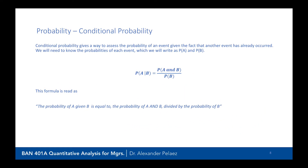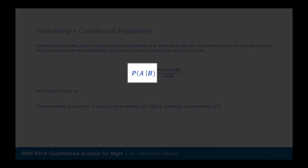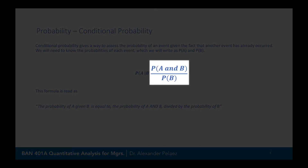Conditional probability gives us a way to assess the probability of an event given the fact that another event has already occurred. We need the probabilities of each event, and we use the formula: the probability of A given B equals the probability of A and B divided by the probability of B.